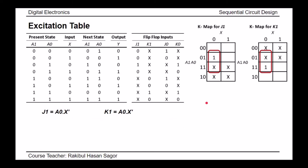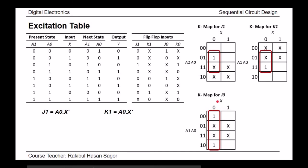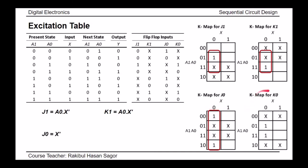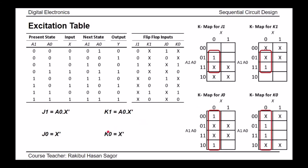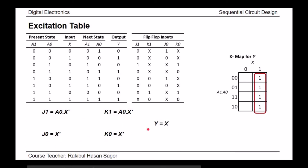For the Karnaugh map for J0, we have two ones, and grouping them with don't care conditions gives the expression J0 equals X prime. Similarly for K0, the expression is also X prime. Finally, mapping the Y output Karnaugh map and taking the box containing all ones gives us the Boolean expression for Y.